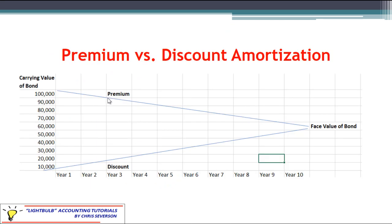What we are going to see here — and these numbers aren't from the actual example we just used, this is just to make a point — is that whatever the discount bond starts at, if a discount bond was issued at a very low price, over time it will work its way up until eventually at retirement we have the face value of the bond equaling the carrying value.